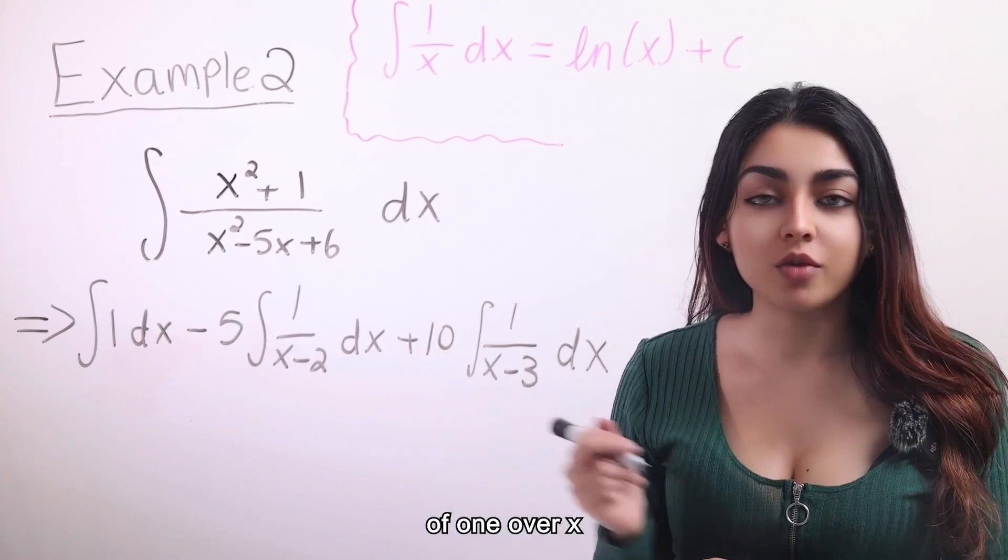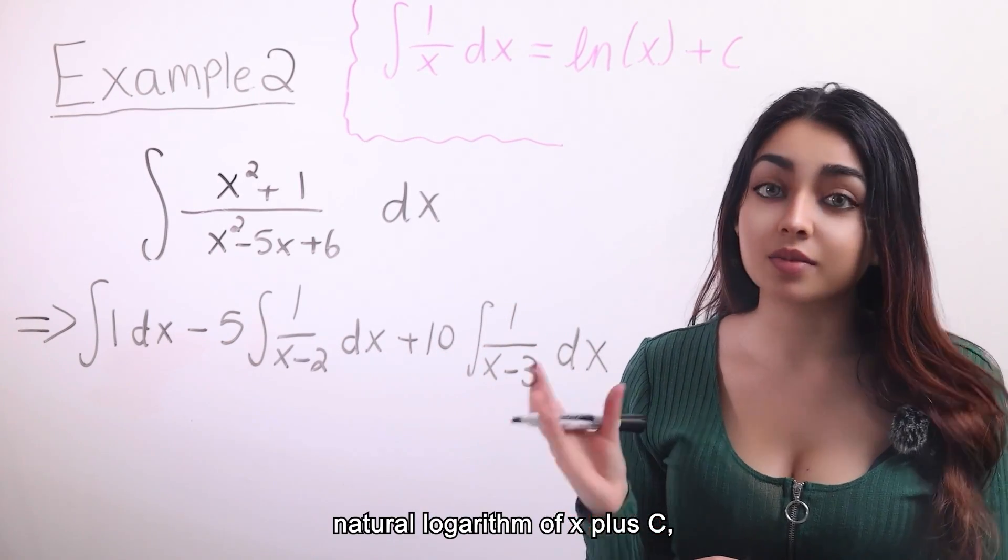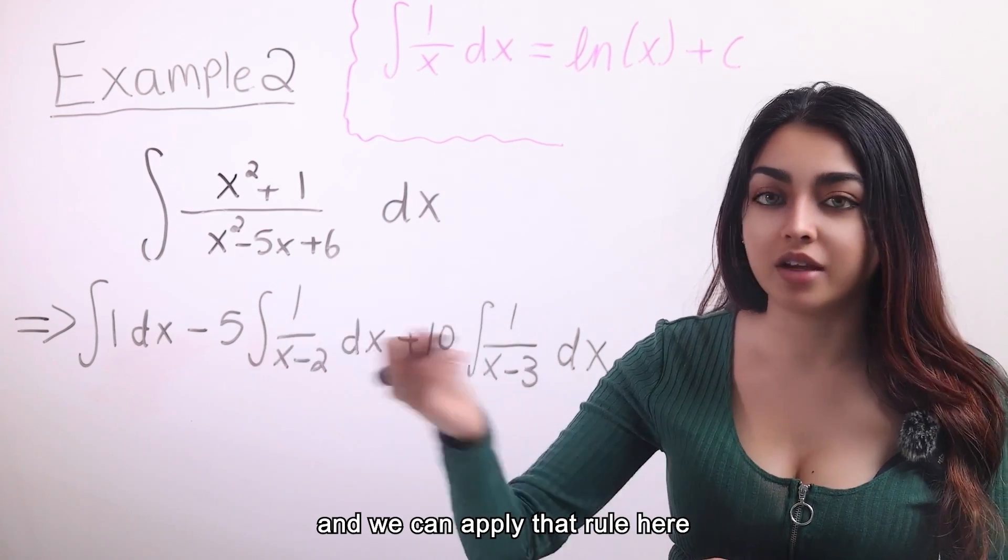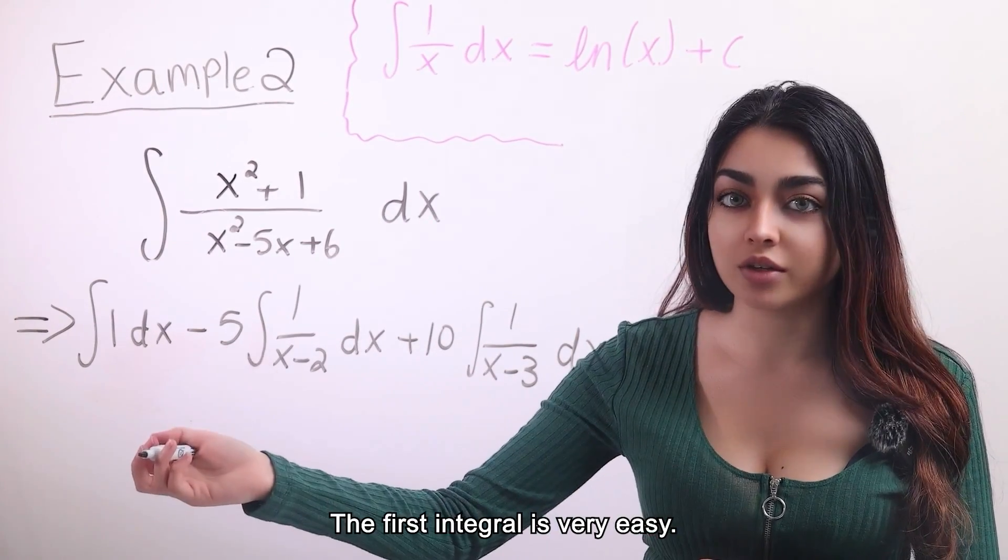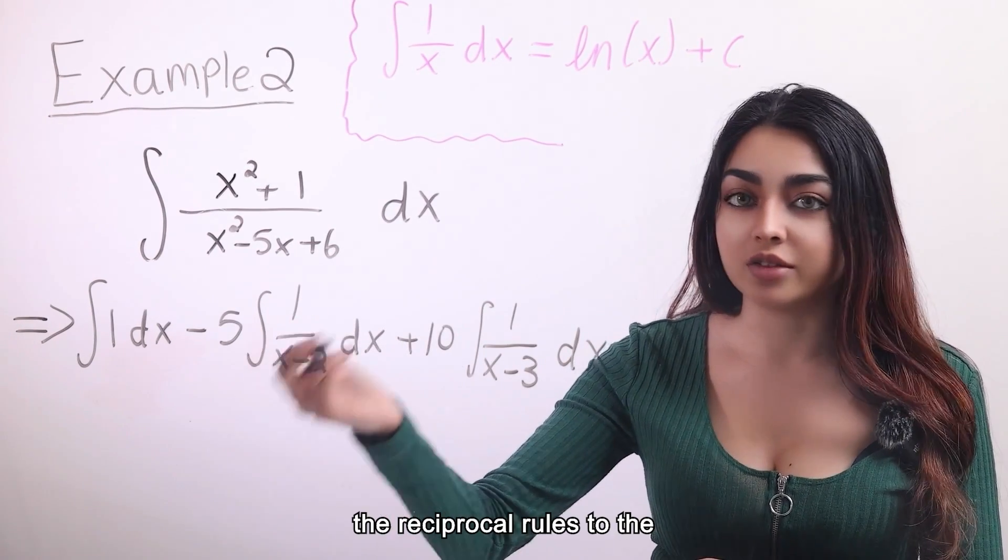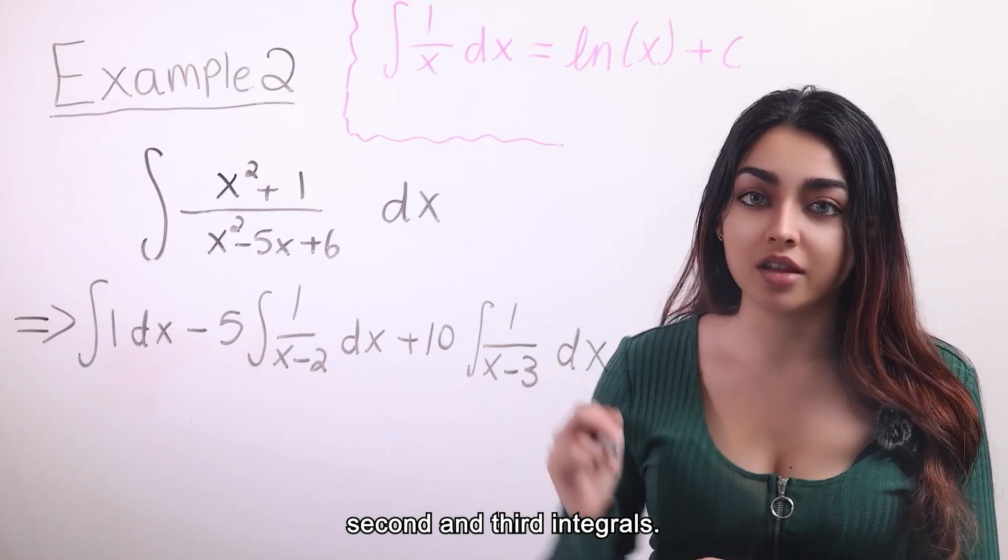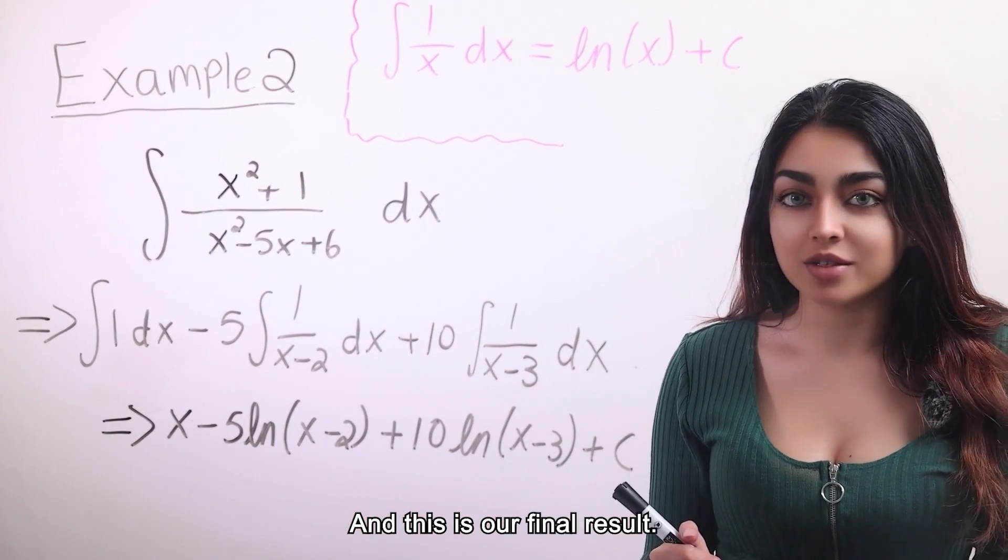When you take the integral of 1 over x dx, you get the natural logarithm of x plus c. And we can apply that rule here for the second and third integrals. The first integral is very easy. The integral of 1 is just x and then we can apply the reciprocal rules to the second and third integrals. And this is our final result.